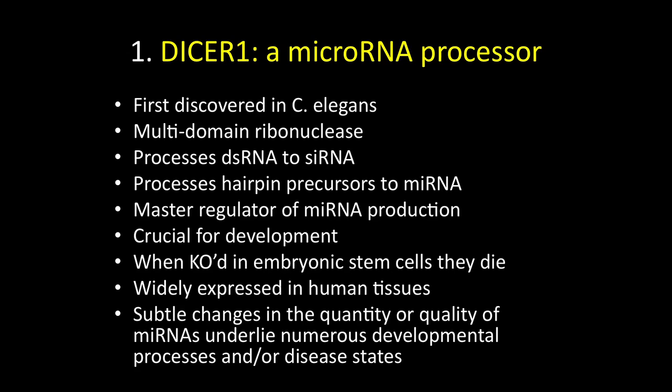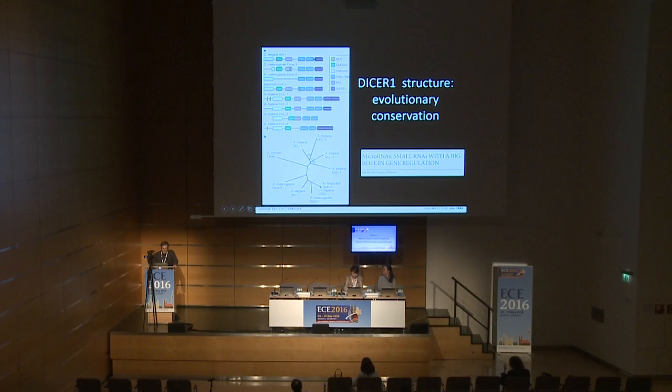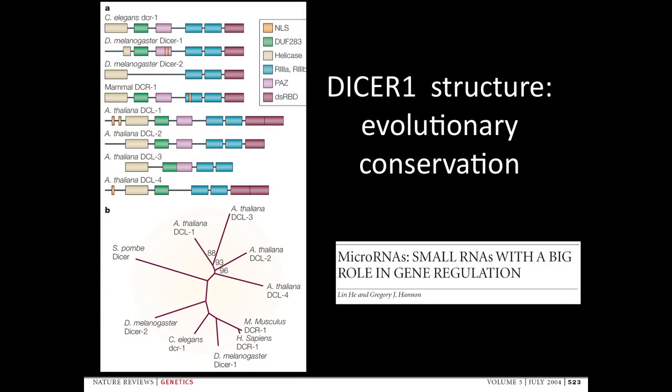We know that subtle changes in microRNAs actually seem to underlie an enormous number of developmental processes — depression, diabetes, dementia — you'll see links published. In terms of conservation, this is very interesting: plant, mammal, fly, and C. elegans all show that these domains are extremely well-conserved, particularly focused on RNH3A and 3B, and all species have the same 3A and 3B configuration.